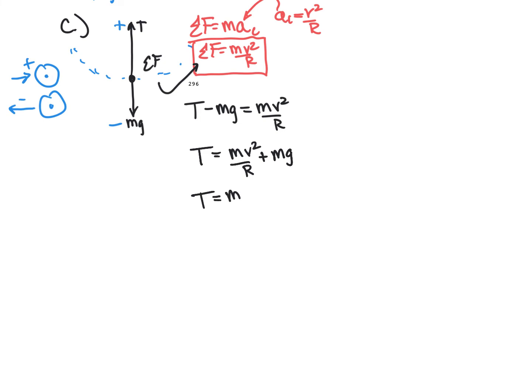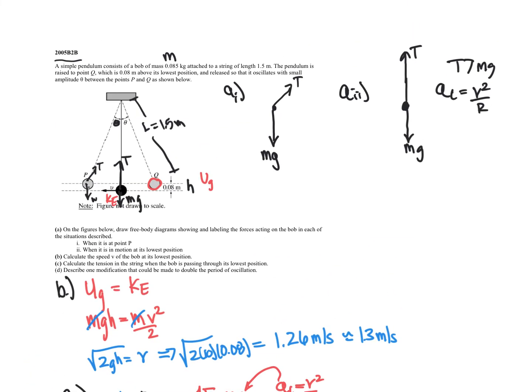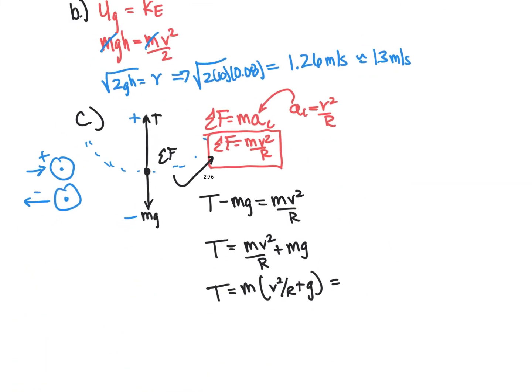So you get tension minus mass times gravity equals MV squared over R. And we're going to plug these in. So that would be the algebraic way to solve this. So now all we have to do is plug in our answers.